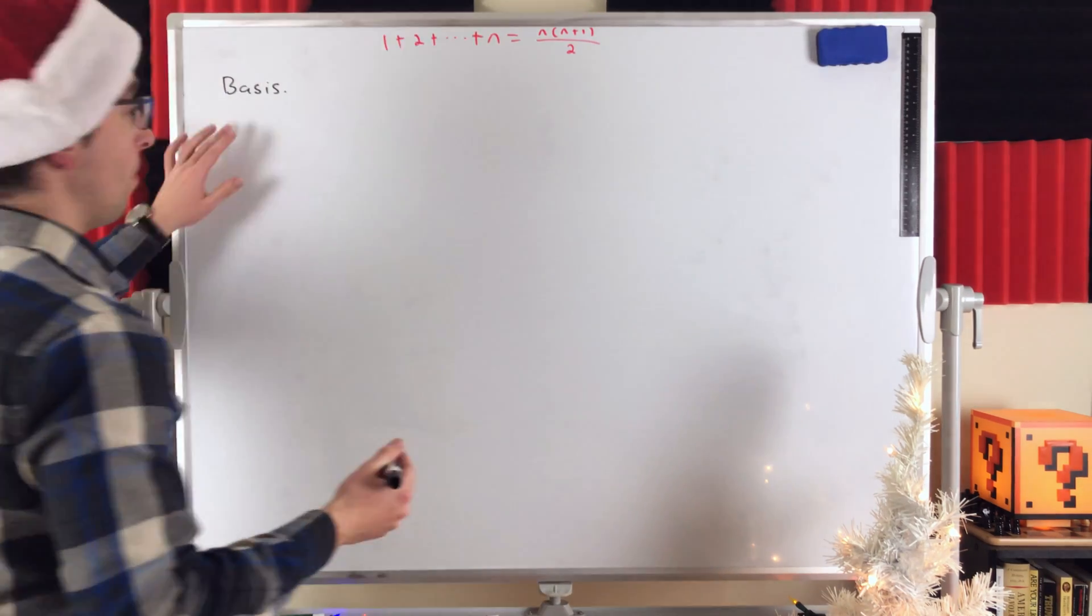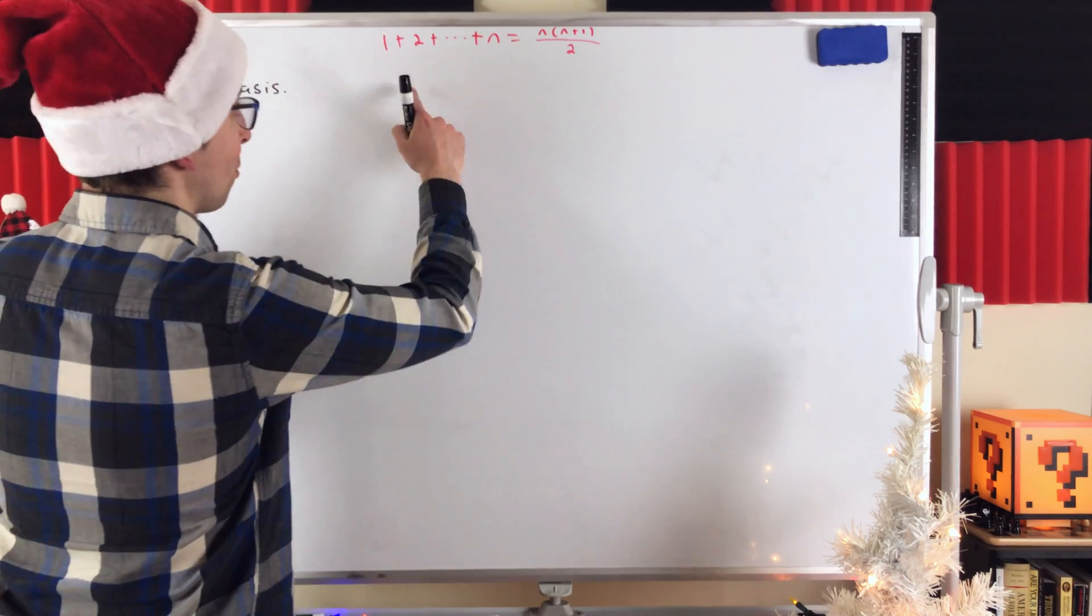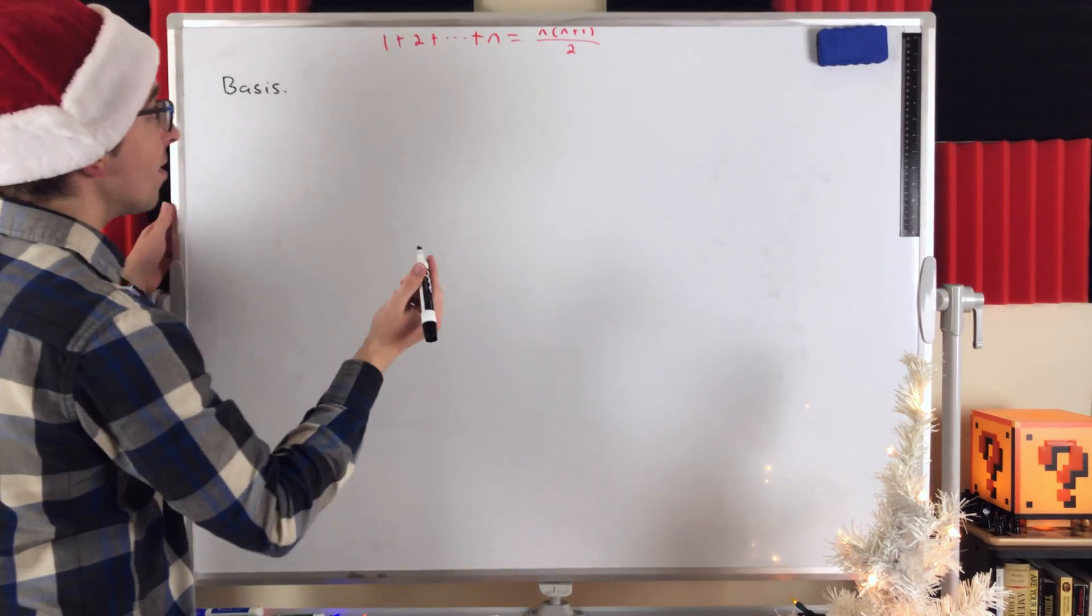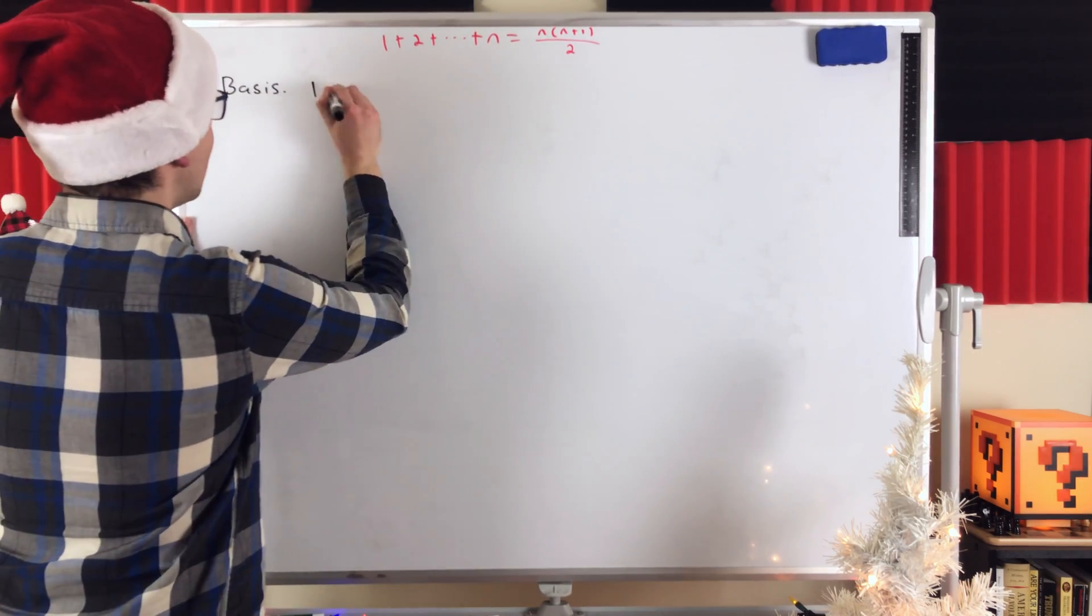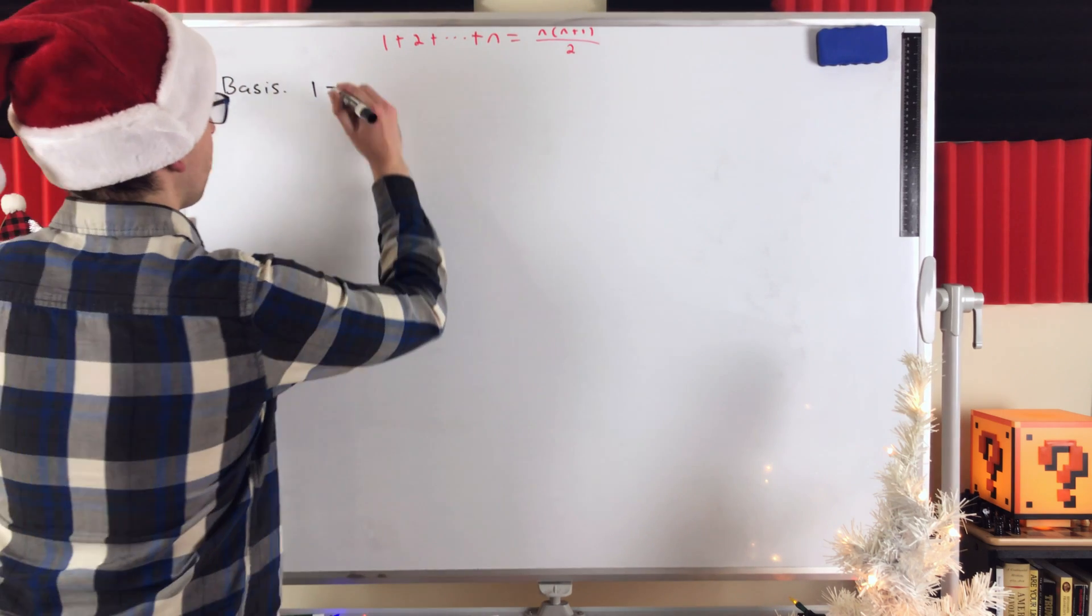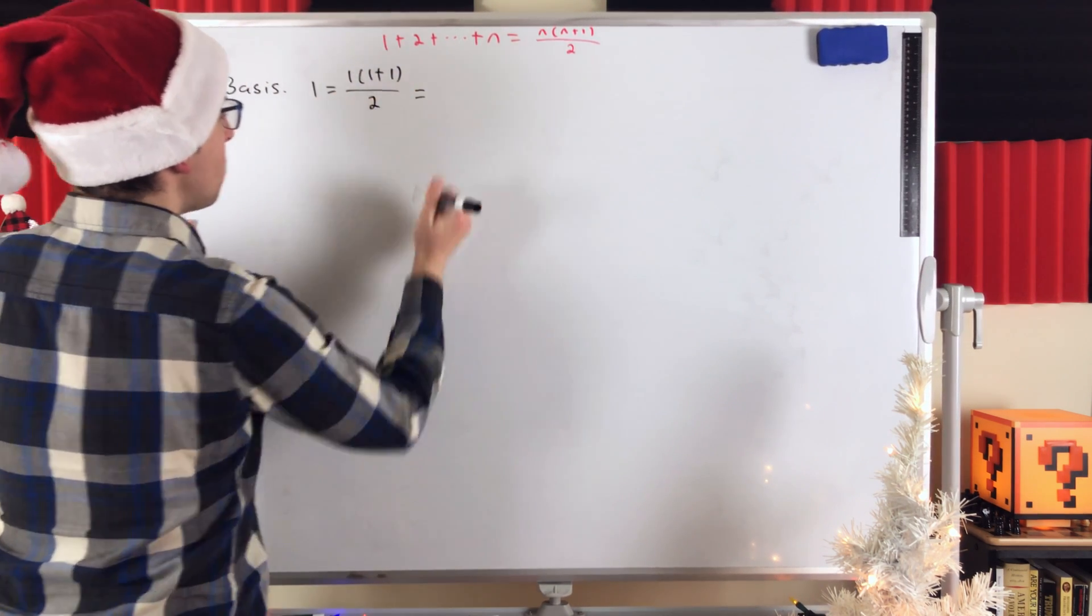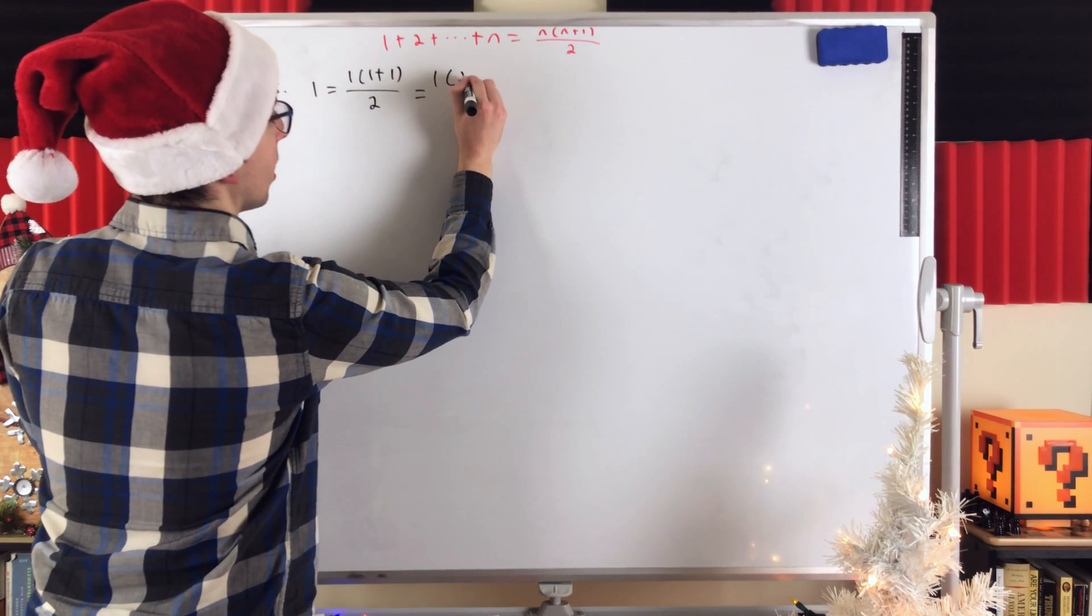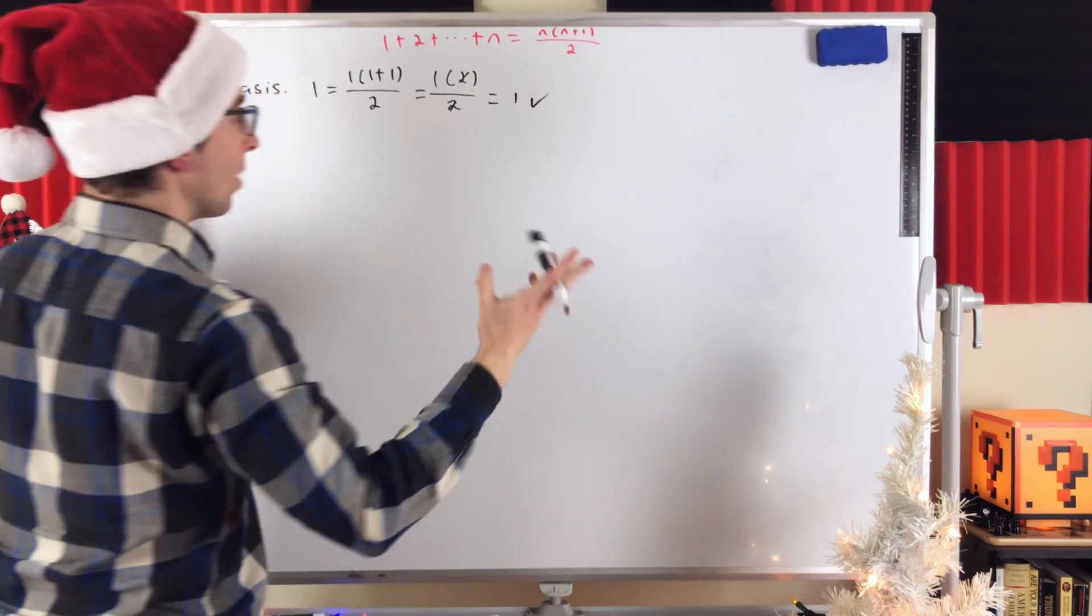In this case, it's really simple. The basis step usually is really simple. We can pretty much just write this equation and check to make sure it's true. So what's the sum of the first 1 counting number? Well, it's just 1. And then this equation evaluated at n equals 1 is 1 times 1 plus 1 divided by 2, which is equal to 1 times 2 divided by 2. 2's cancel out. It's equal to 1. We see it works.